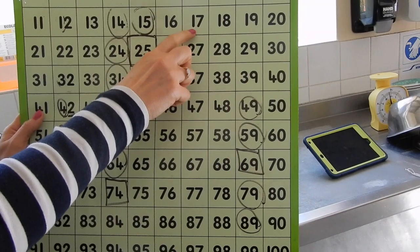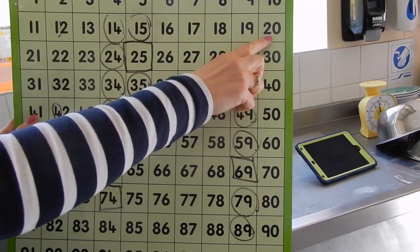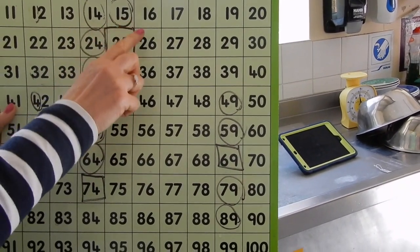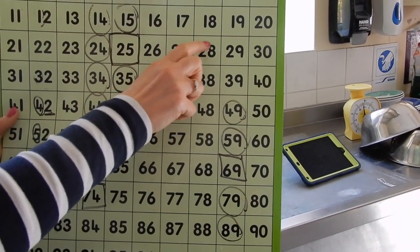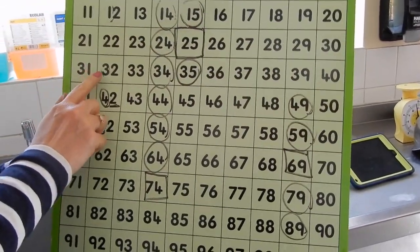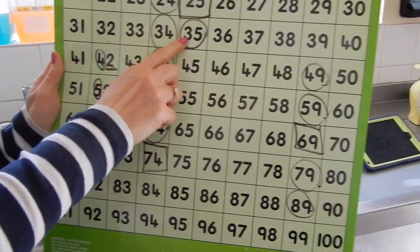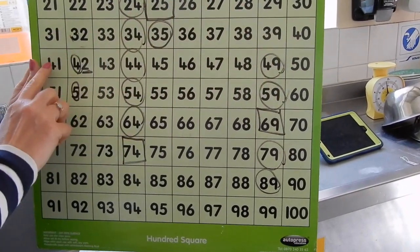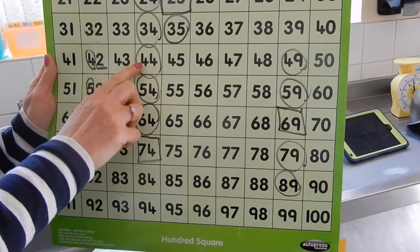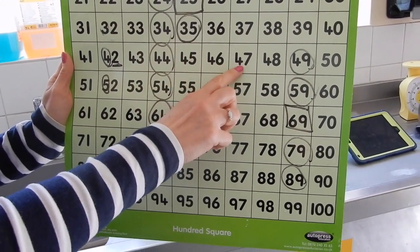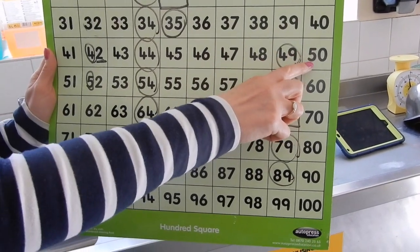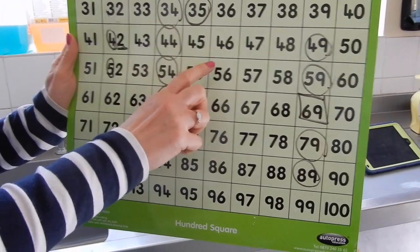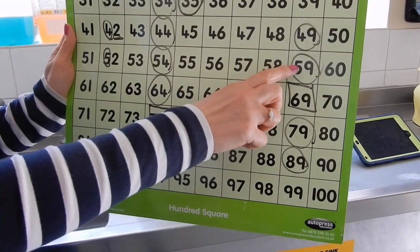One, two, three, four, five, six, seven, eight, nine, ten, eleven, twelve, thirteen, fourteen, fifteen, sixteen, seventeen, eighteen, nineteen, twenty, twenty-one, twenty-two, twenty-three, twenty-four, twenty-five, twenty-six, twenty-seven, twenty-eight, twenty-nine, thirty, thirty-one, thirty-two, thirty-three, thirty-four, thirty-five, thirty-six, thirty-seven, thirty-eight, thirty-nine, forty, forty-one, forty-two, forty-three, forty-four, forty-five, forty-six, forty-seven, forty-eight, forty-nine, fifty, fifty-one, fifty-two, fifty-three, fifty-four, fifty-five, fifty-six, fifty-seven, fifty-eight, fifty-nine, sixty.